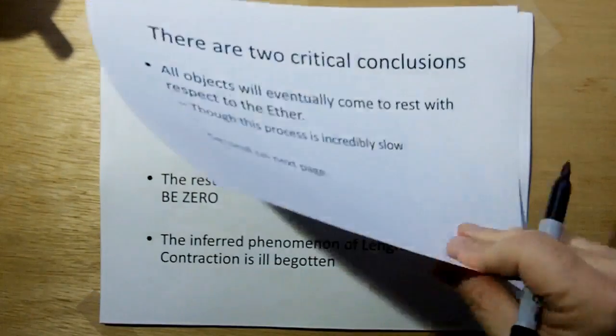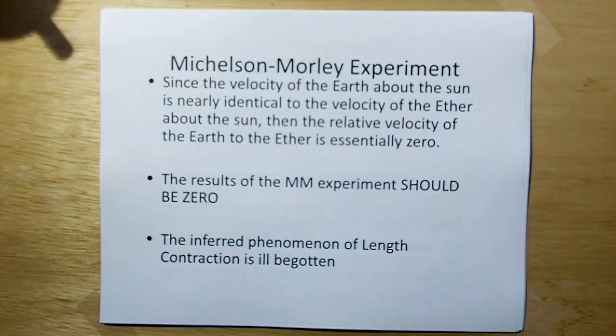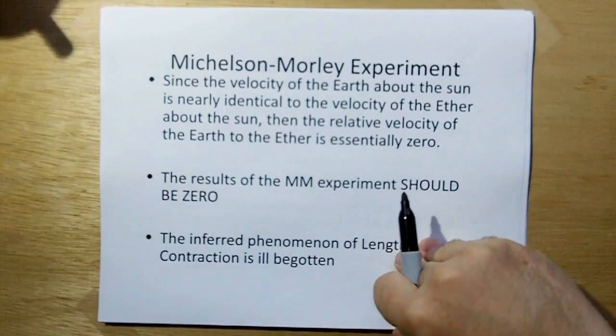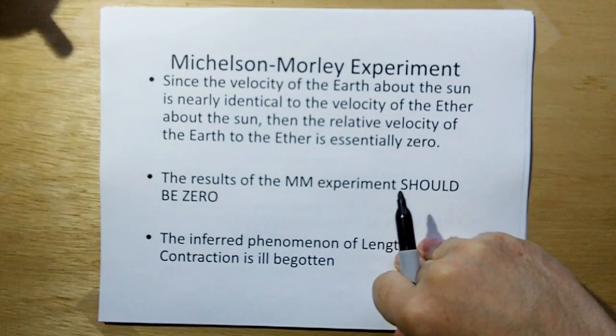The second is, since the velocity of the earth about the sun is nearly identical to the velocity of the ether about the sun, then the relative velocity of the earth to the ether is essentially zero. So the results of the Michelson-Morley experiment should be zero. The inferred phenomenon of length contraction is ill-begotten. It wasn't necessary, because we're not moving relative to the ether.